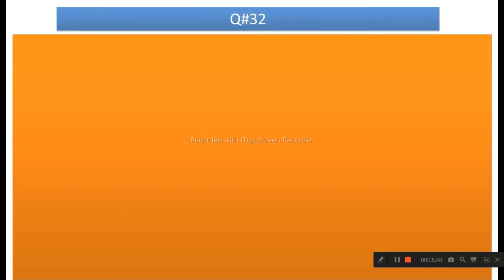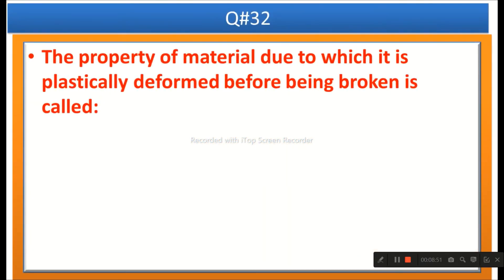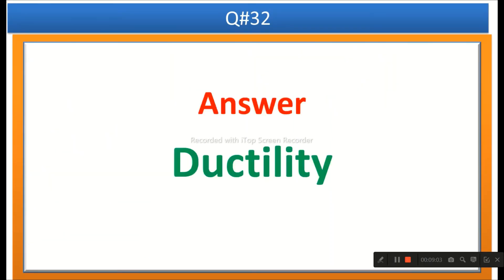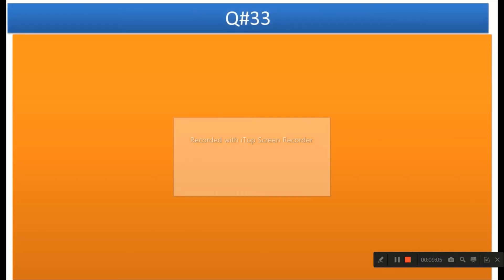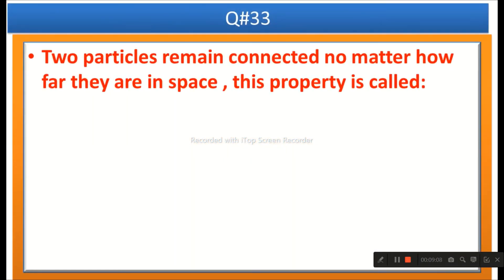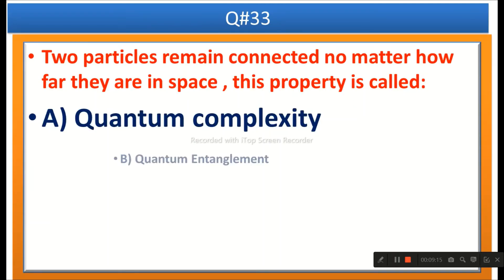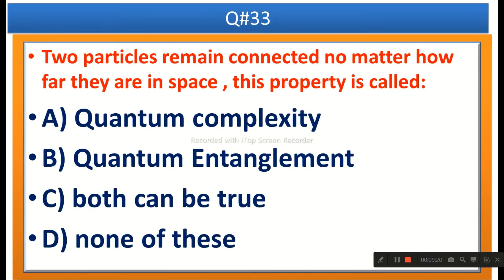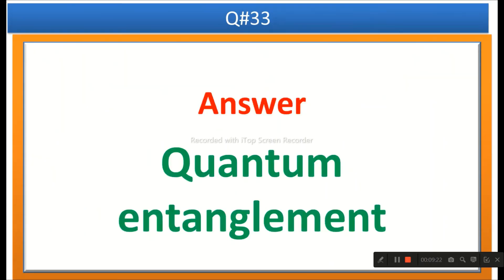The next question: The property of a material due to which it is plastically deformed before being broken is called — options are ductility, plasticity, elasticity, or none of these. The right answer is ductility. The next question: Two particles remain connected no matter how far apart they are in space — this property is called — options are quantum complexity, quantum entanglement, both can be true, or none of these. The right answer is quantum entanglement.